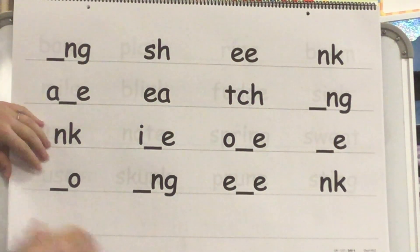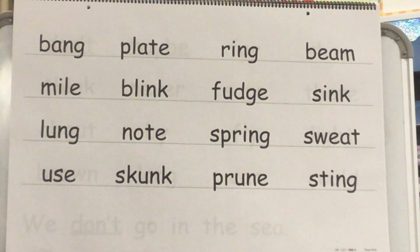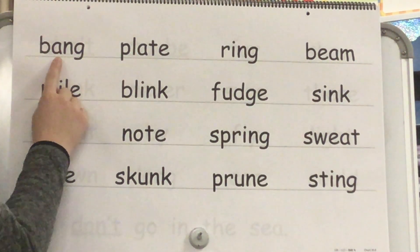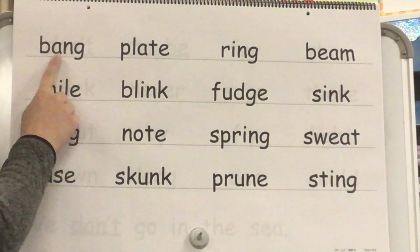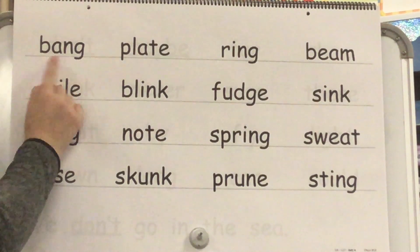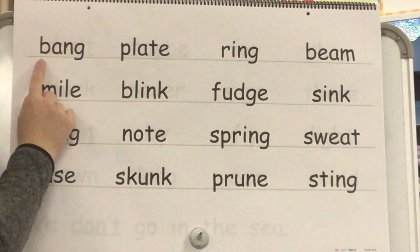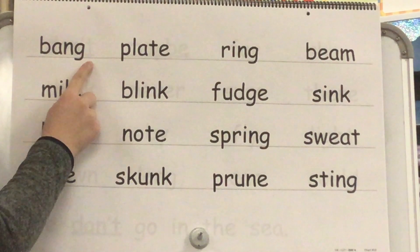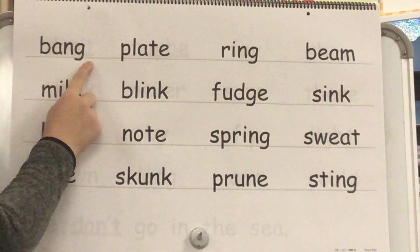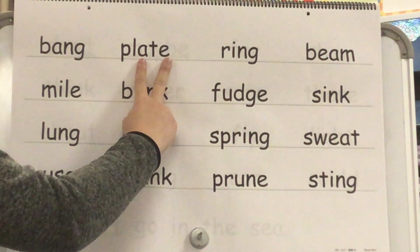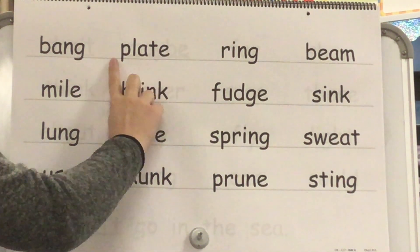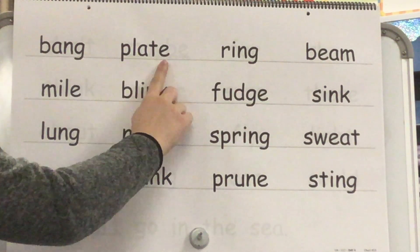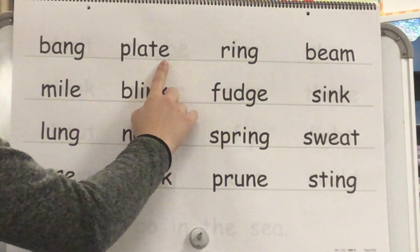Let's put our sounds into words. Say A. Sound? A. Sound? Nk. Blend? B-ang. Word? Bang. Yes, bang. Sound? A. Blend? Pl-ate. Word? Plate. Yes, plate.